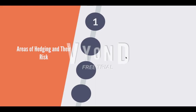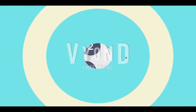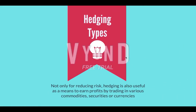A business can implement hedging technique in the following areas: commodities, which include agricultural products, energy products, metals, etc.; securities, which include investments in shares, equities, indices, etc.; currencies, which include foreign currencies — there are various types of risks associated with it; and interest rates, which include the lending and borrowing rates.